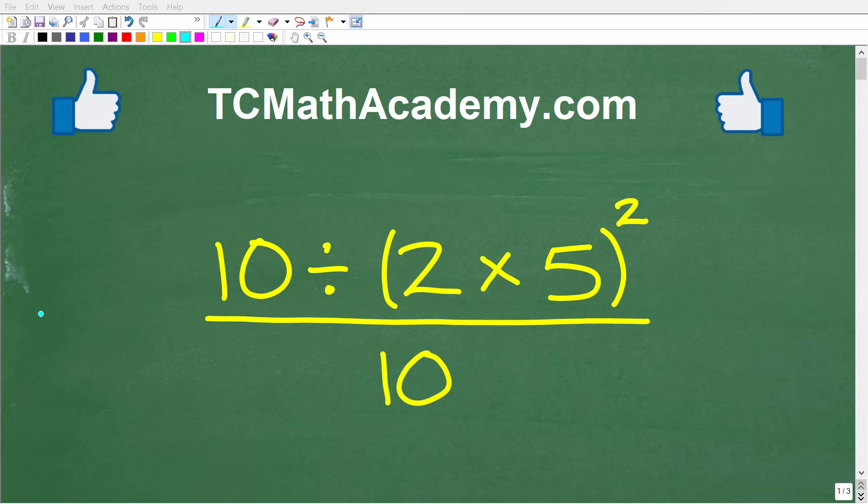Get some paper and a pencil and let's practice basic math. All right, so here is our problem. We have 10 divided by 2 times 5 in parentheses squared, all of this over 10.